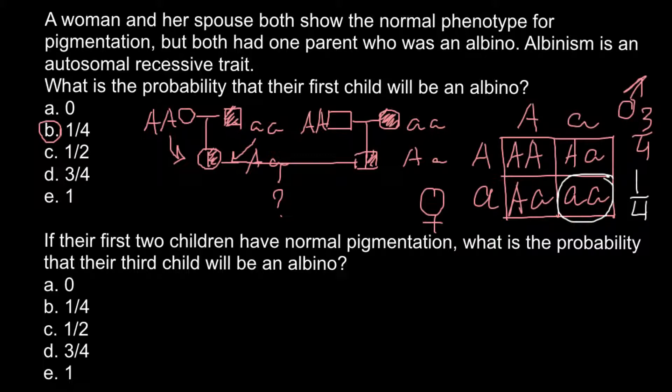So the chances that the third child would inherit this genetic disorder would be 1 out of 4, and the answer is B.